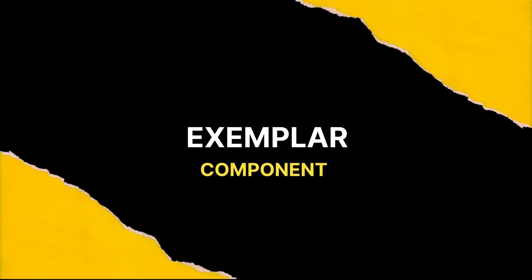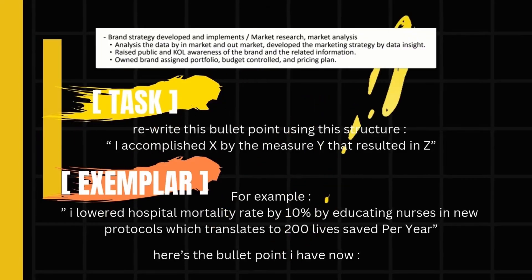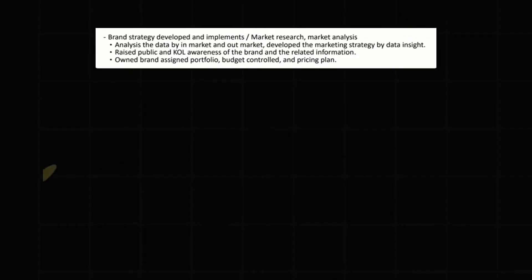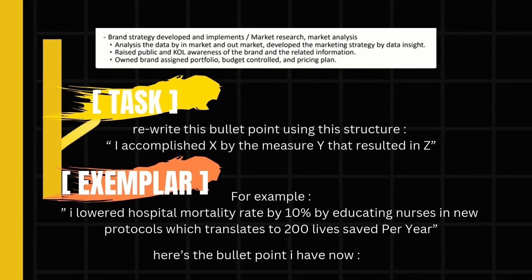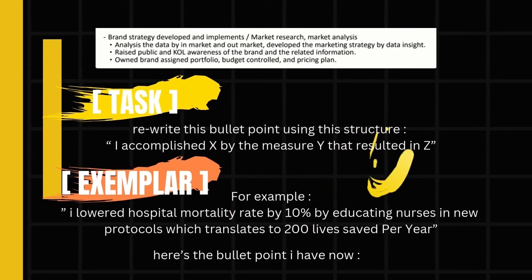Exemplar can enhance the effectiveness of a prompt by providing clear examples or frameworks to guide the model in generating higher-quality output. Research on large language models has shown that including a specific example within the prompt leads to more relevant and structured responses. We have three types of exemplars.